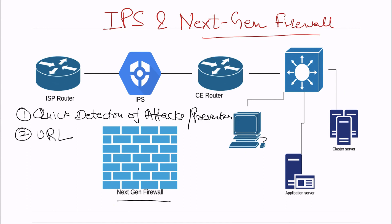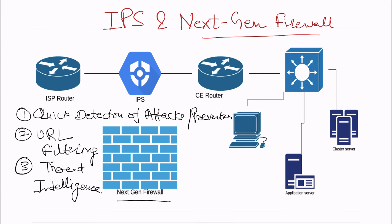The next gen firewall is very efficient in URL filtering — you can do whitelisting and blacklisting of URLs. It also has threat intelligence capability. It is not possible to have 100% protection, but the next gen firewall should be capable of identifying threats and informing the team. It can't prevent all threats, but it should identify them and inform the security operations engineer or team responsible for maintaining security.